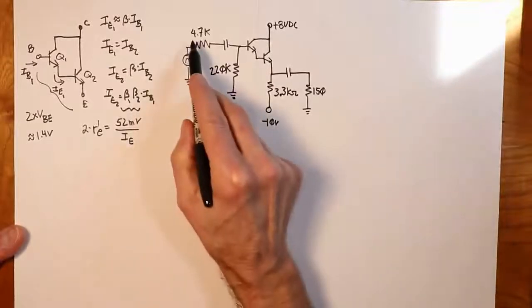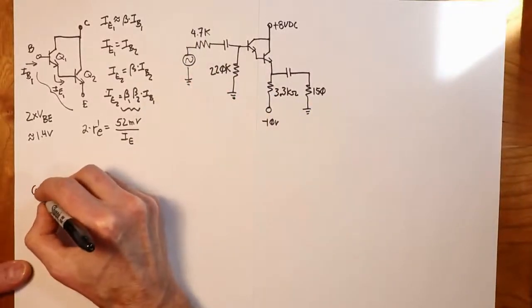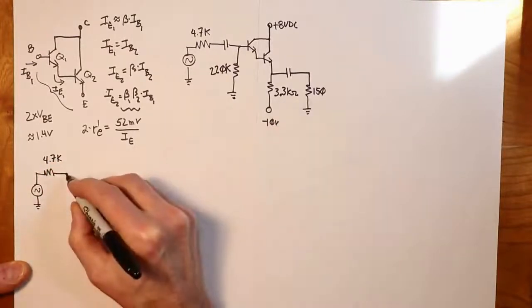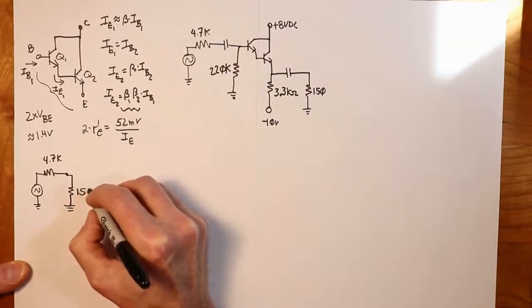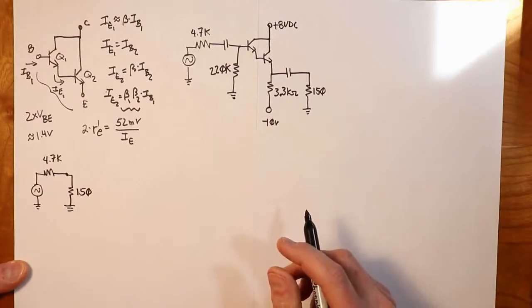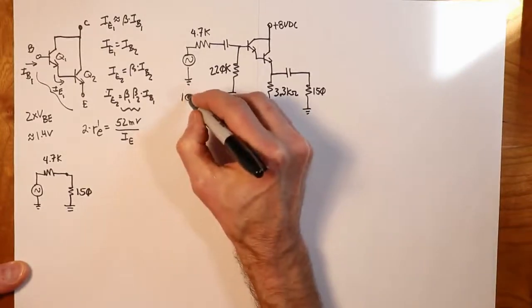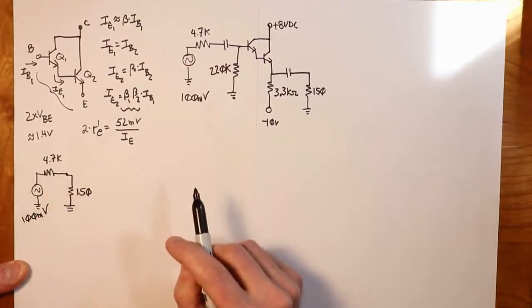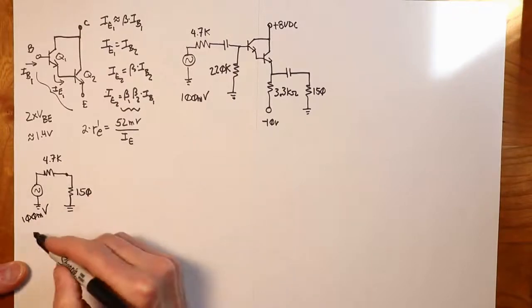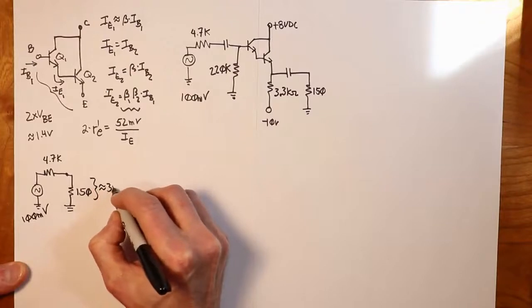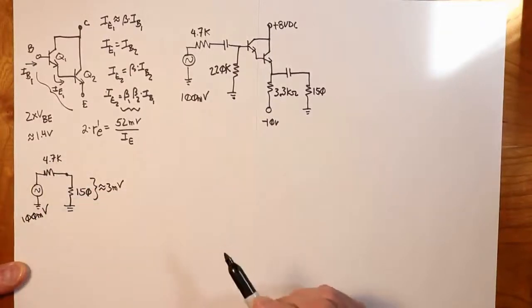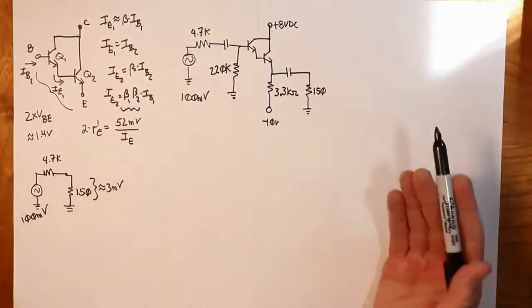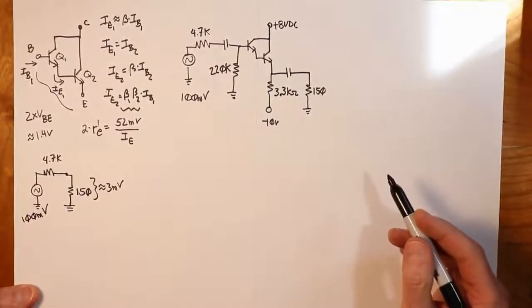Before we go any further, if you had directly connected this source to this load—the source with a 4.7K ohm internal impedance to this 150 ohm load—you can see there's going to be a huge voltage divider effect. If we chose an input of 100 millivolts, the voltage divider is going to be 150 over 150 plus 4.7K, so you're only going to get about 3% of the input signal—somewhere in the vicinity of 3 millivolts. 97 millivolts is lost internally on the generator. That's not effective. We would now need a gain of over 30 just to get back to the original signal of 100 millivolts.